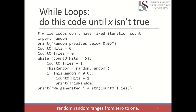The while loop code: count_of_hits and count_of_tries start at zero. While count_of_hits is less than five, we increment count_of_tries using the += 1 operator.